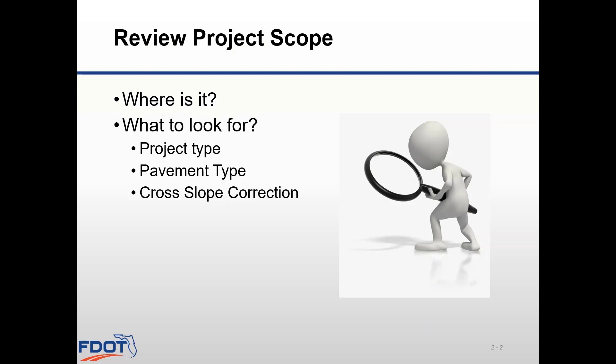Your PM can also provide contact information for other offices you'll need to coordinate with. Once you have your scope of services, find out a few key things such as the project type — is it resurfacing or new construction? Find out the pavement type selected for this project — is it flexible, rigid, or both? Also look for whether the scope calls for any cross-slope correction, which may be identified after scoping once survey data is collected, but is sometimes included in the scope too.